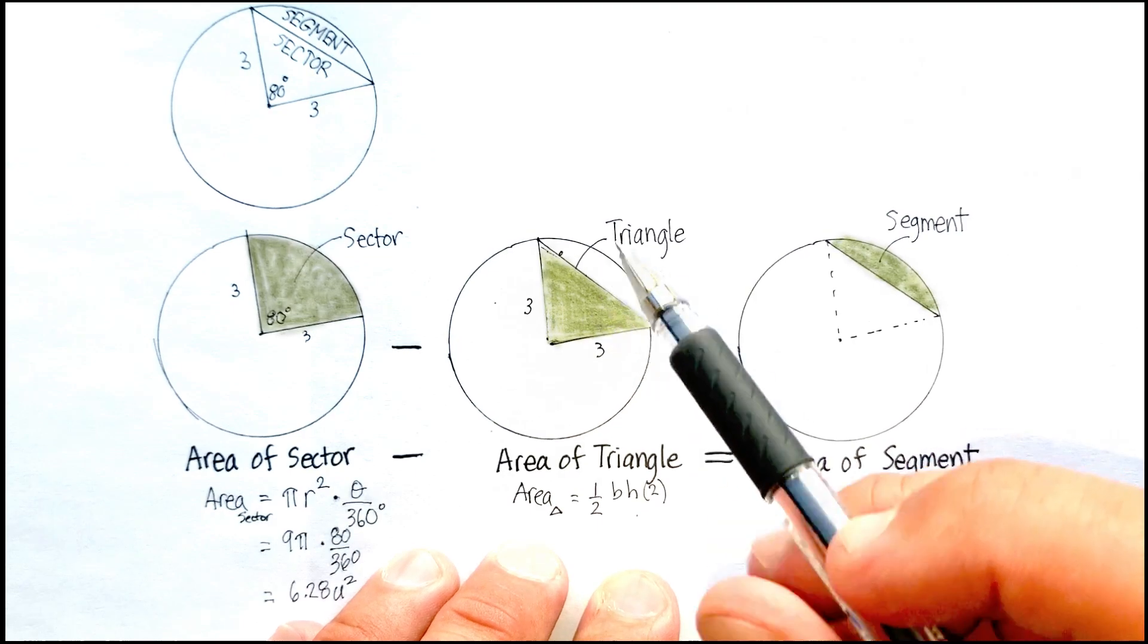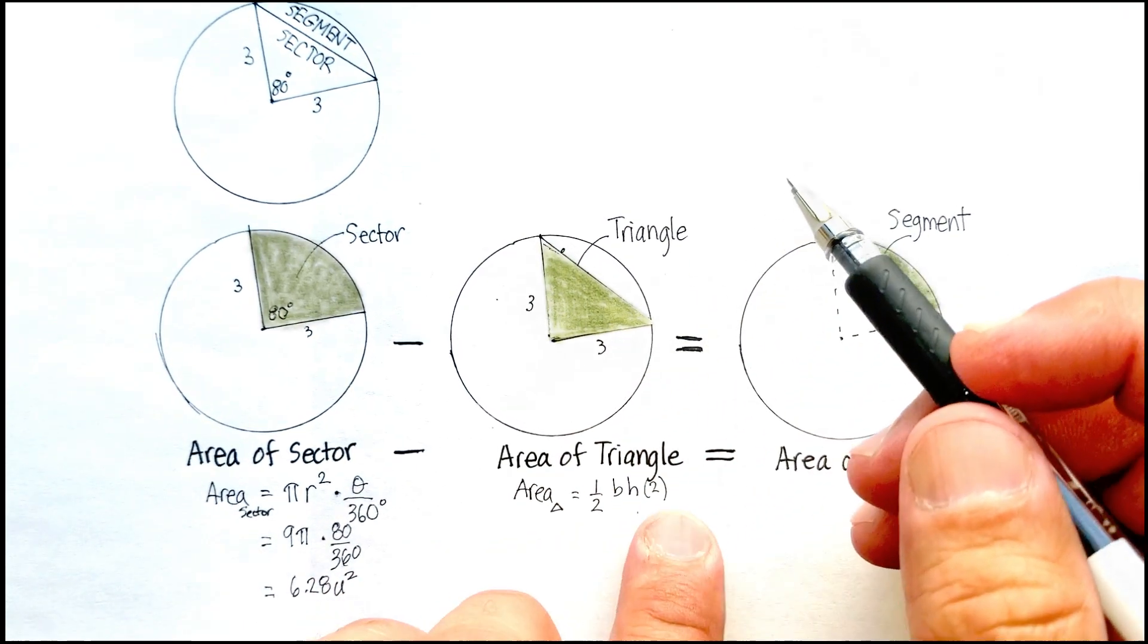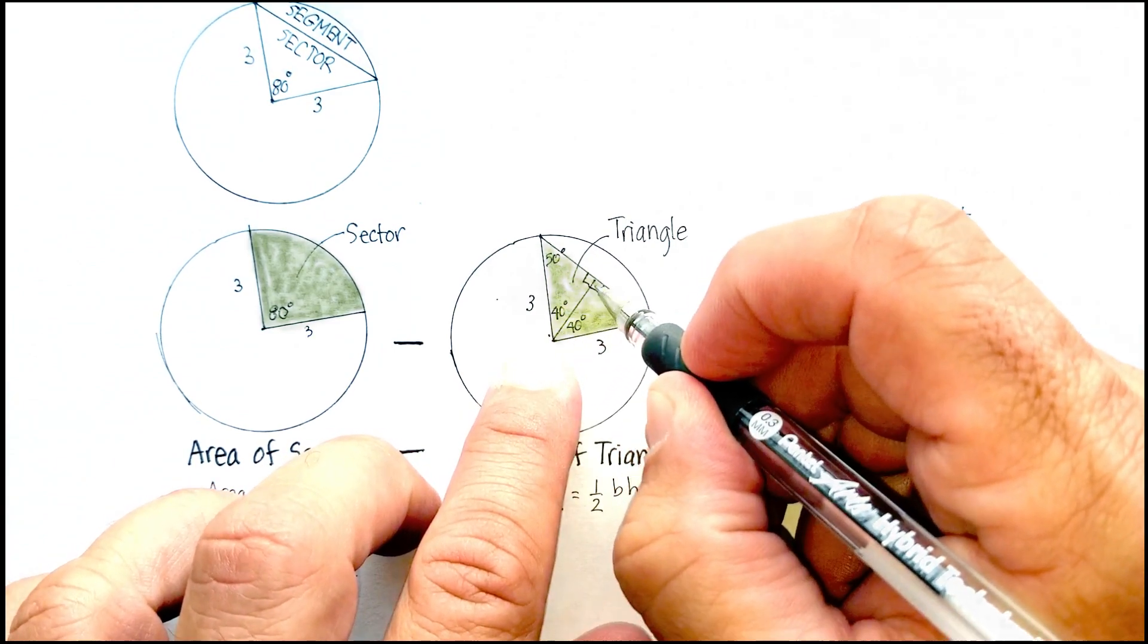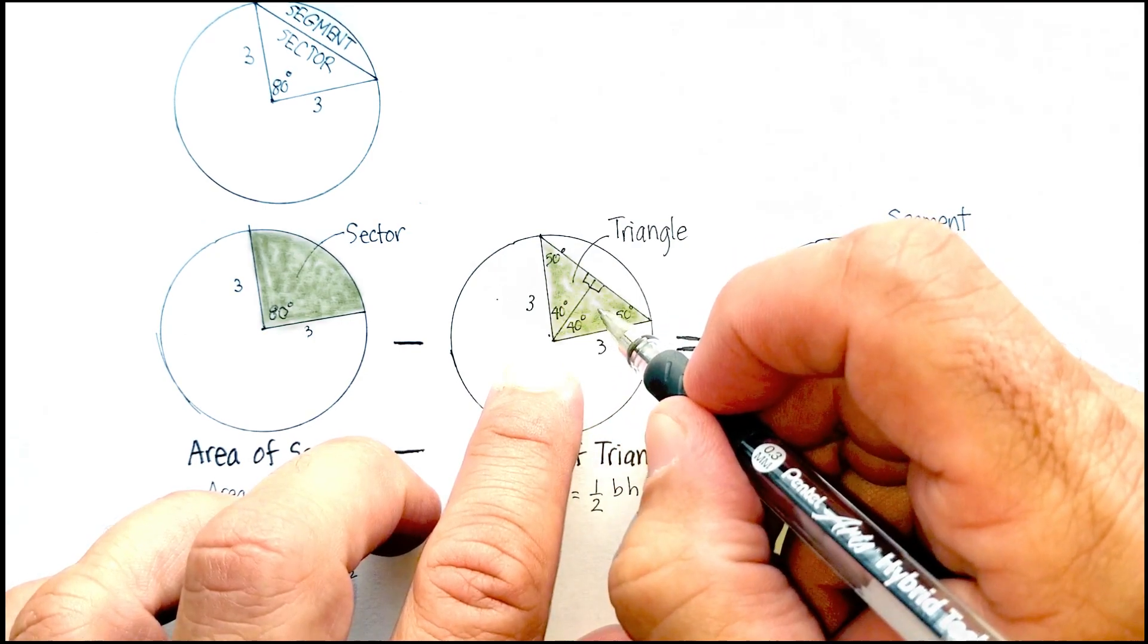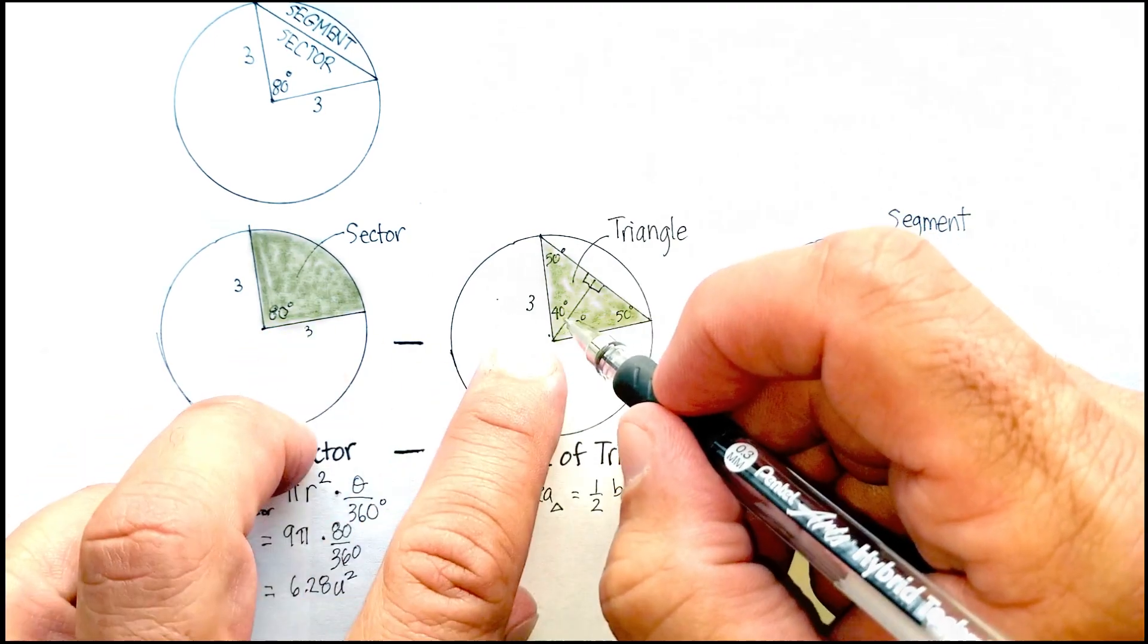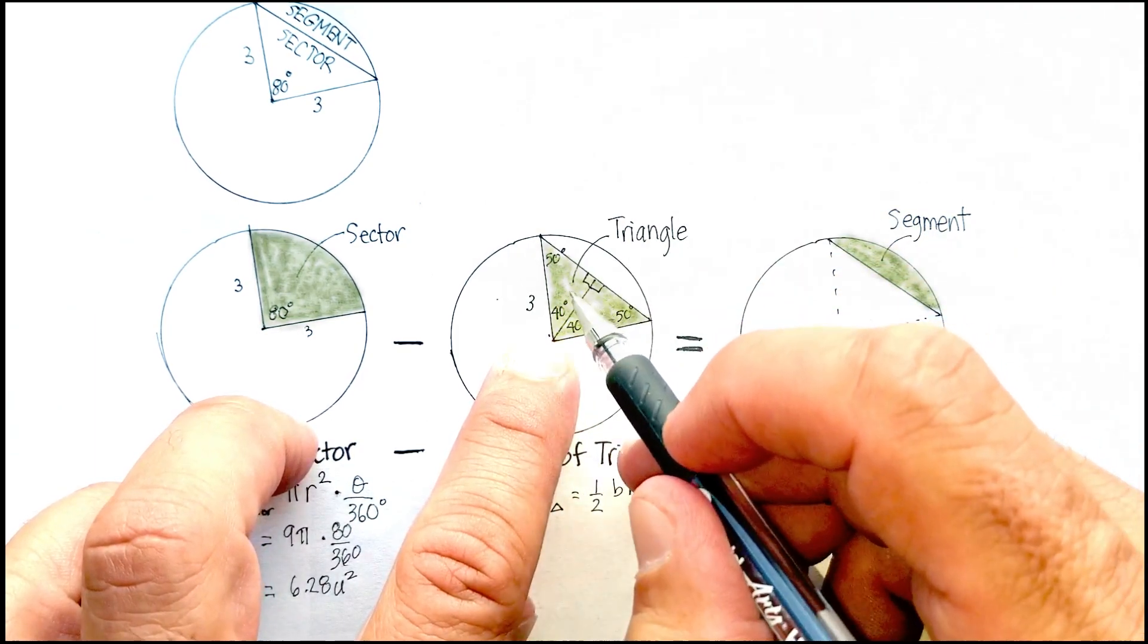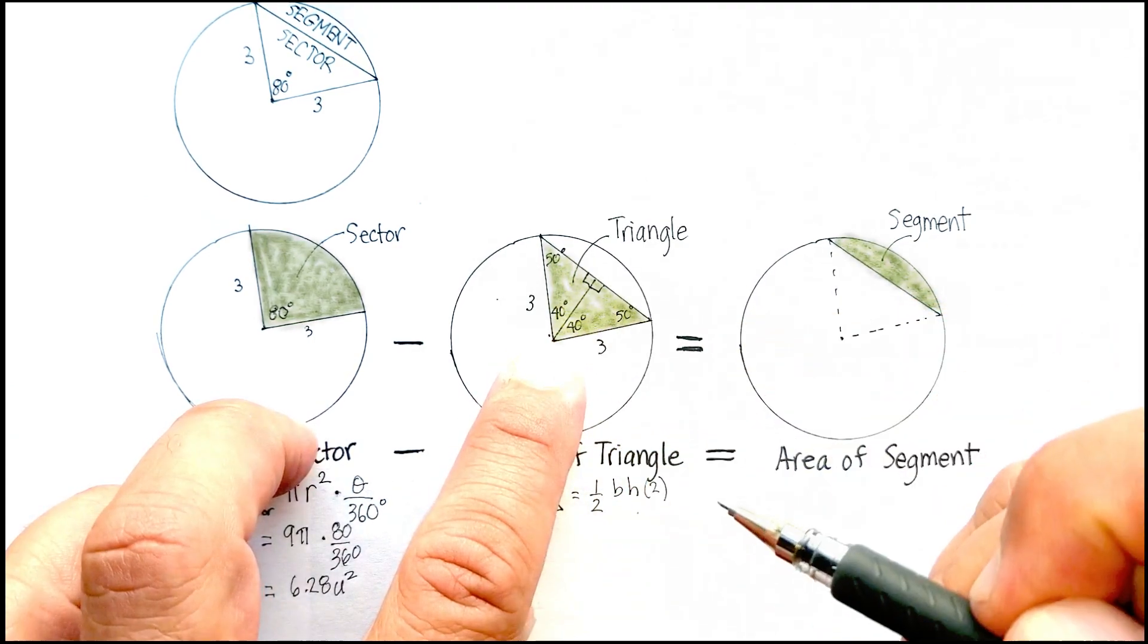We know that this is an 80 degrees here, so this is not a right triangle. So this is what we're going to do. We're going to draw a line right down the middle and create two right triangles. If this was 80 degrees, I'm just going to cut it right in half and create a 40 degree triangle. This is my perpendicular, so that's 90, which leaves 50 here. And since both of these have the exact same dimensions, they are both exactly the same.